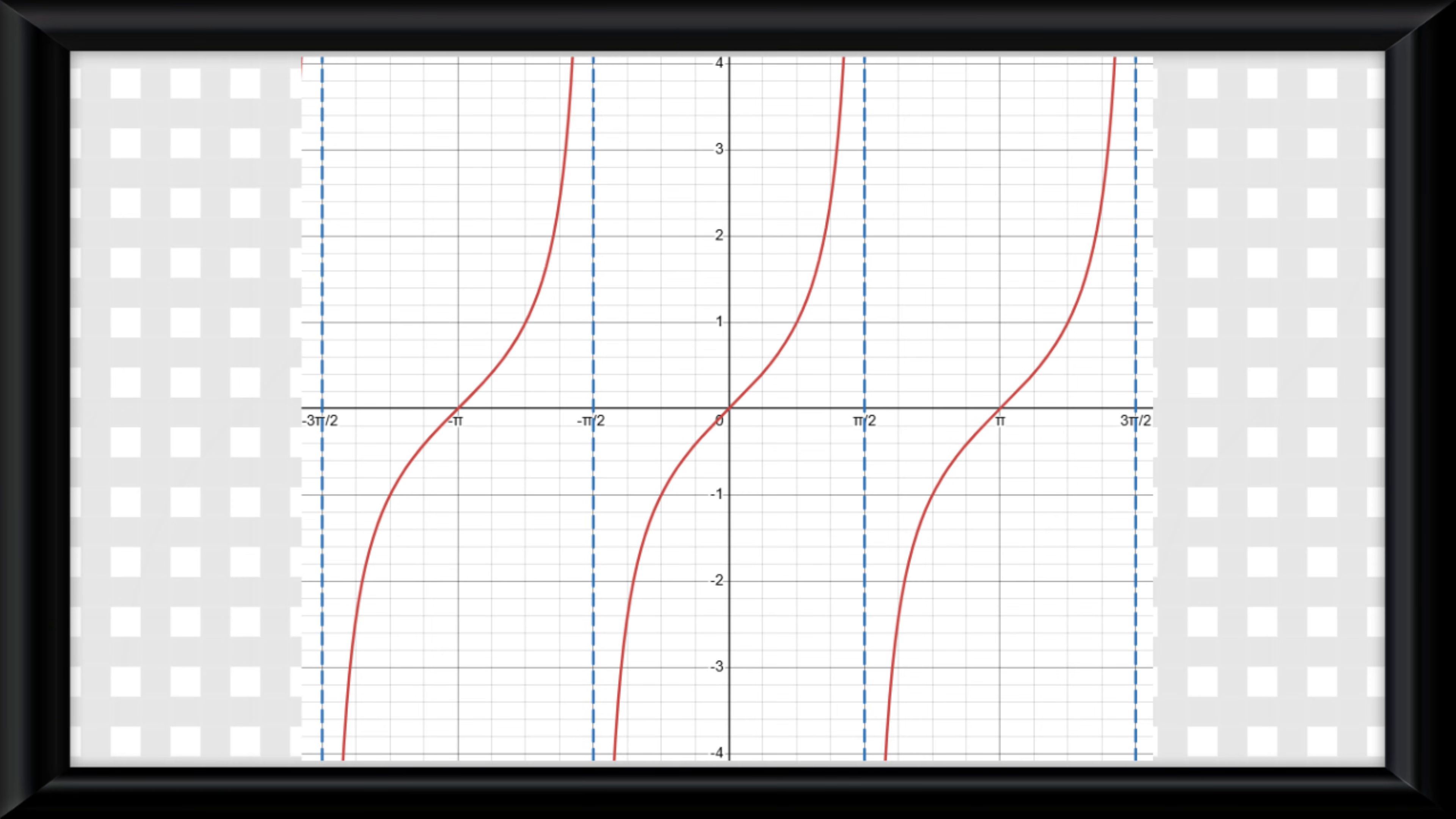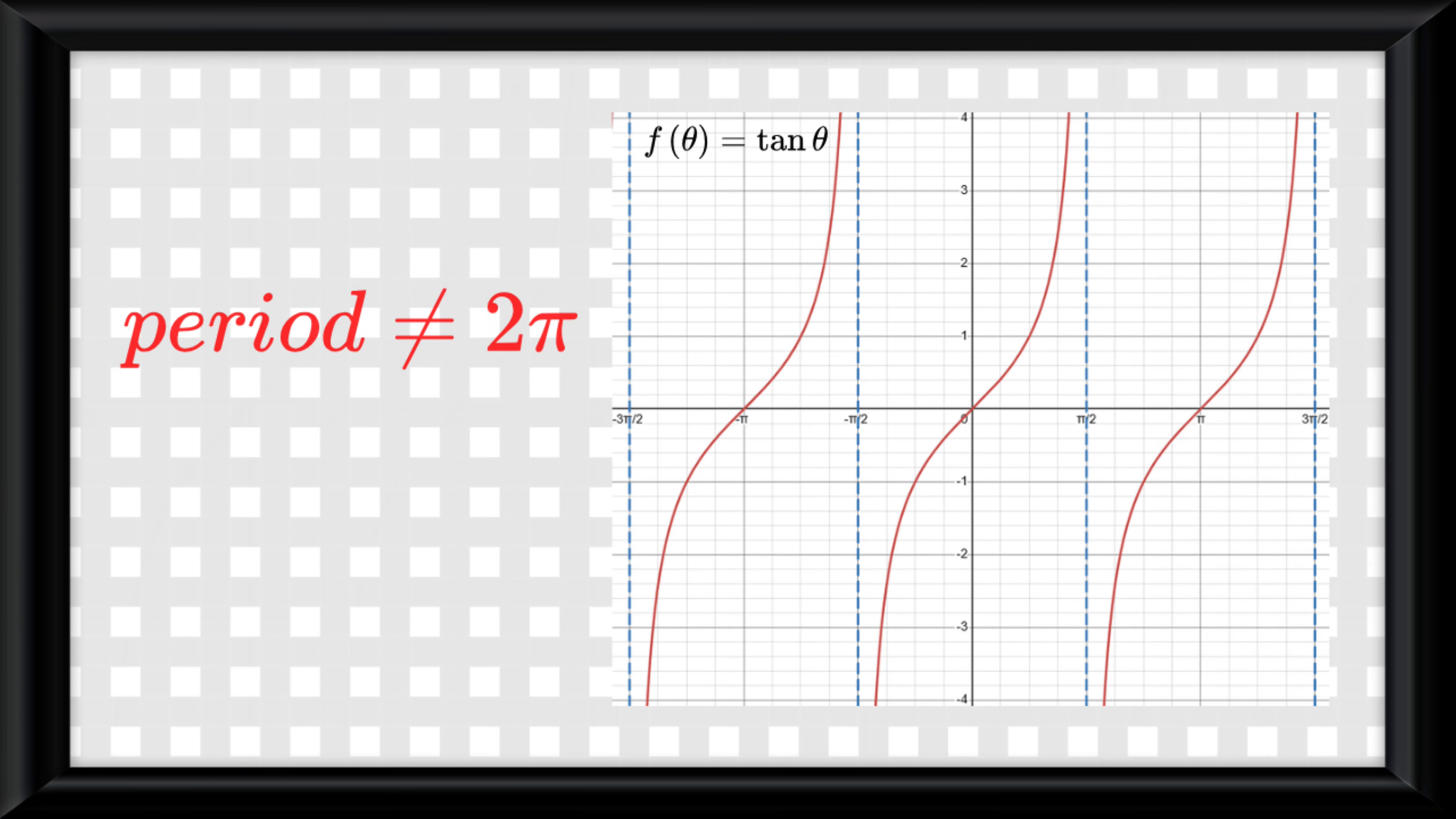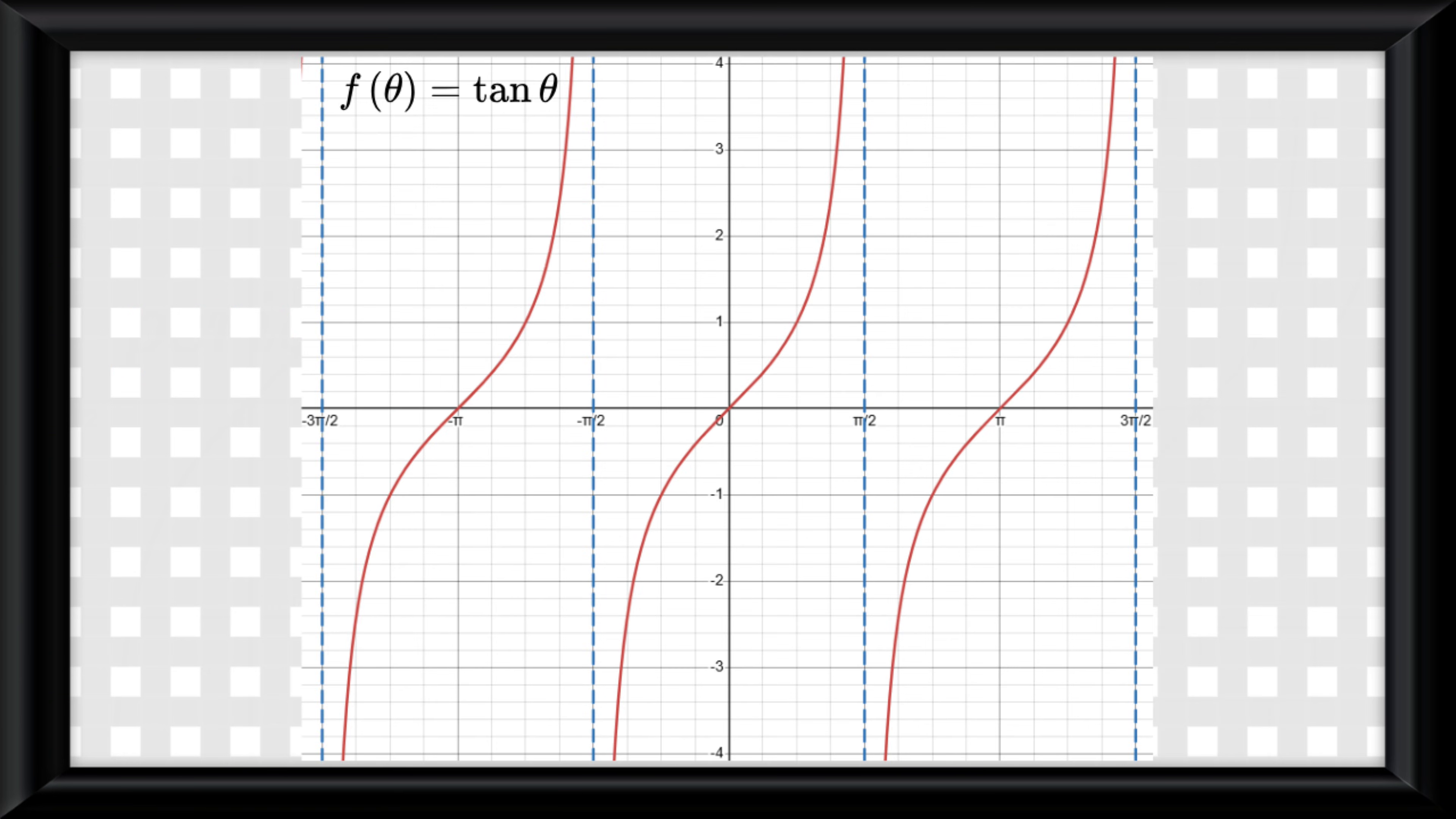This is the parent tangent graph, f of theta is equal to tangent of theta. The period is not 2 pi, but rather now pi. The way you find it is to find the horizontal distance from x-intercept to x-intercept.